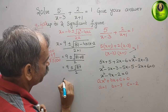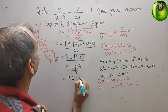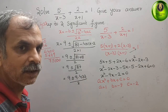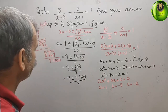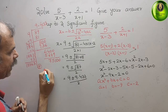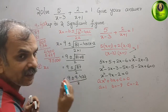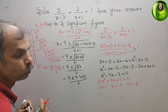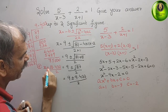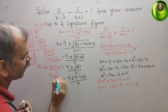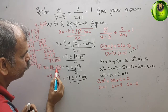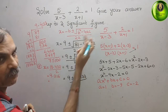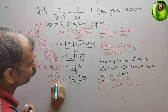We write x = (9 ± 9.433) / 2. Taking the plus case: x = (9 + 9.433) / 2 = 18.433 / 2 = 9.216. To 3 significant figures, x = 9.22.